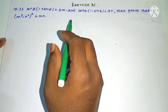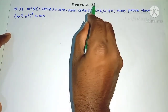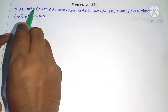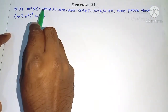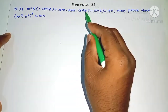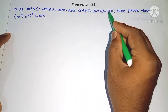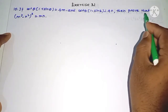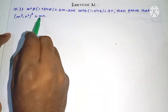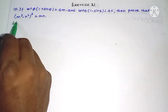Hi student, this is Selama Max tuition 11th standard Exercise 3.1, question number 10. If cot θ into (1 + sin θ) is equal to 4m and cot θ into (1 - sin θ) is equal to 4n, then prove that (m² - n²)² is equal to m into n.